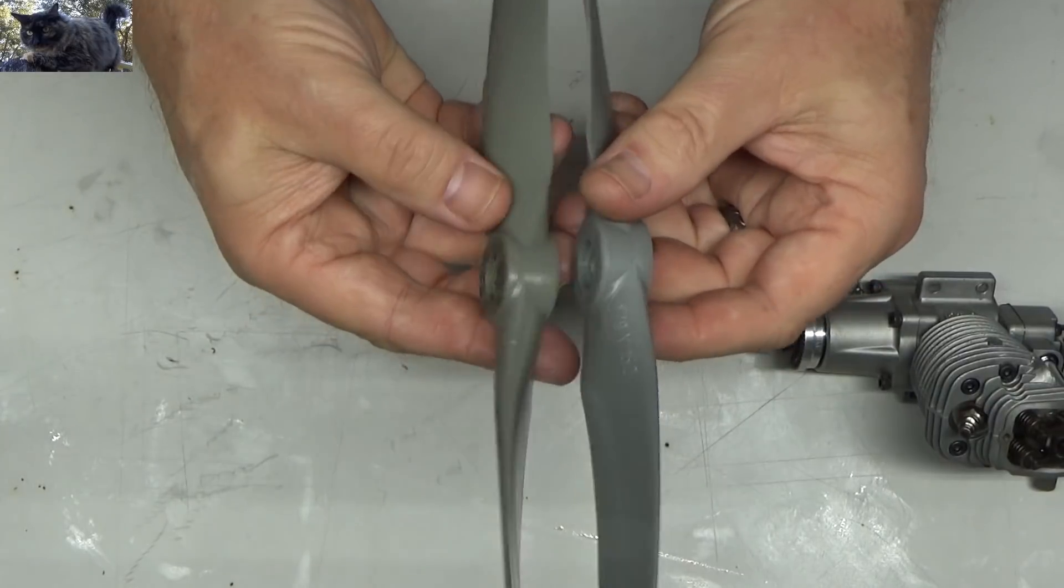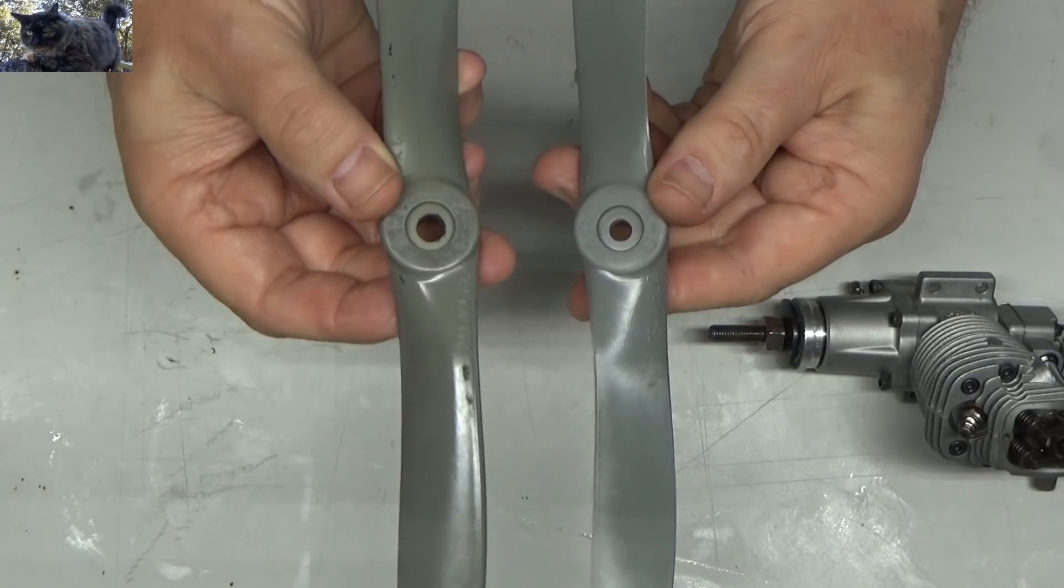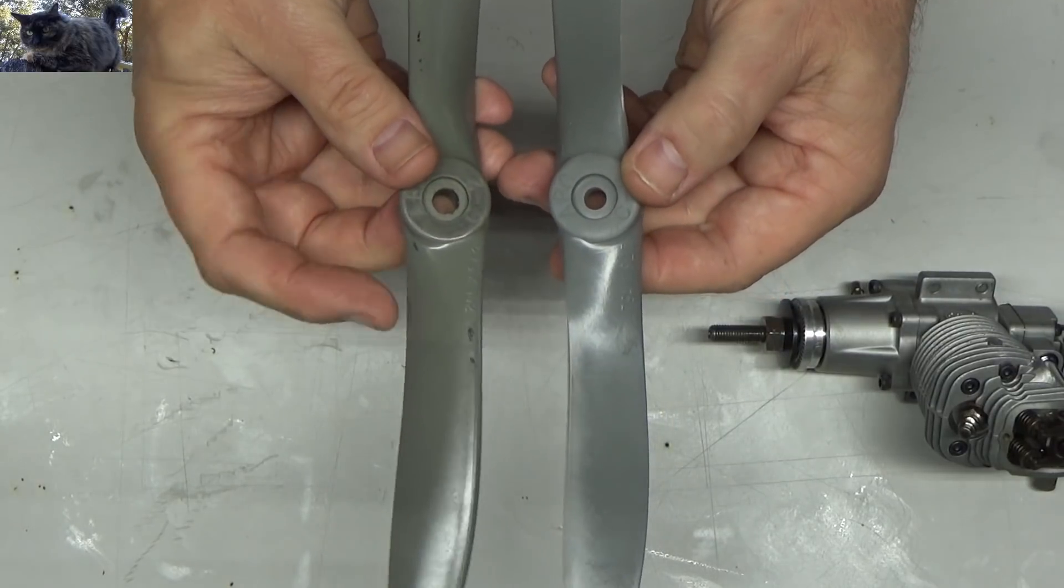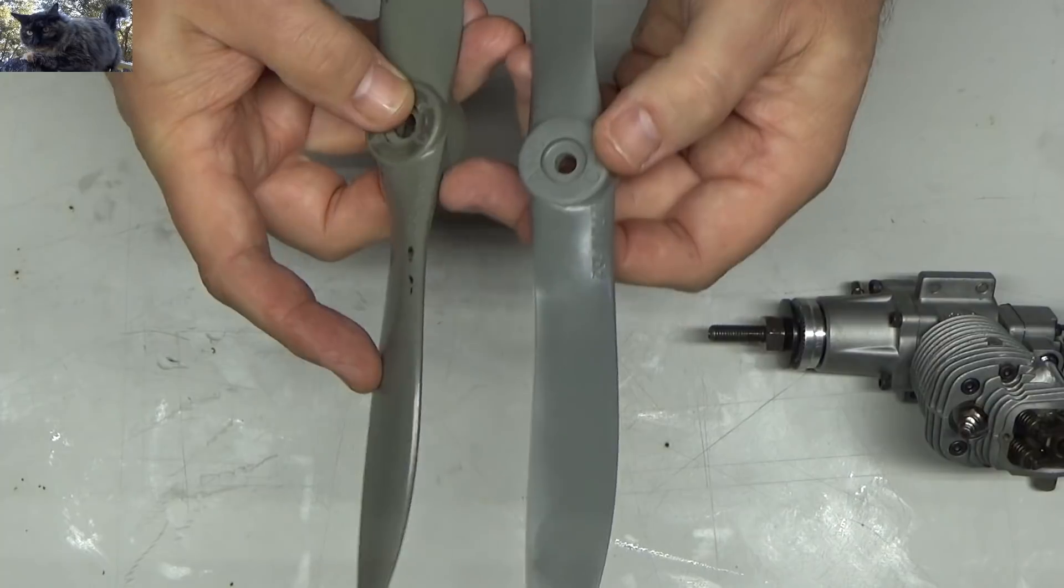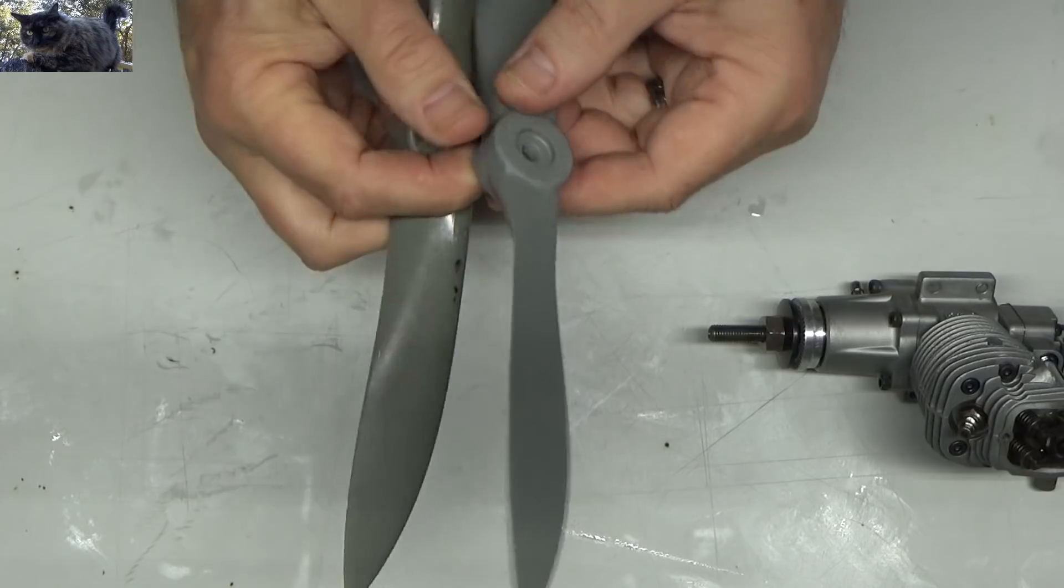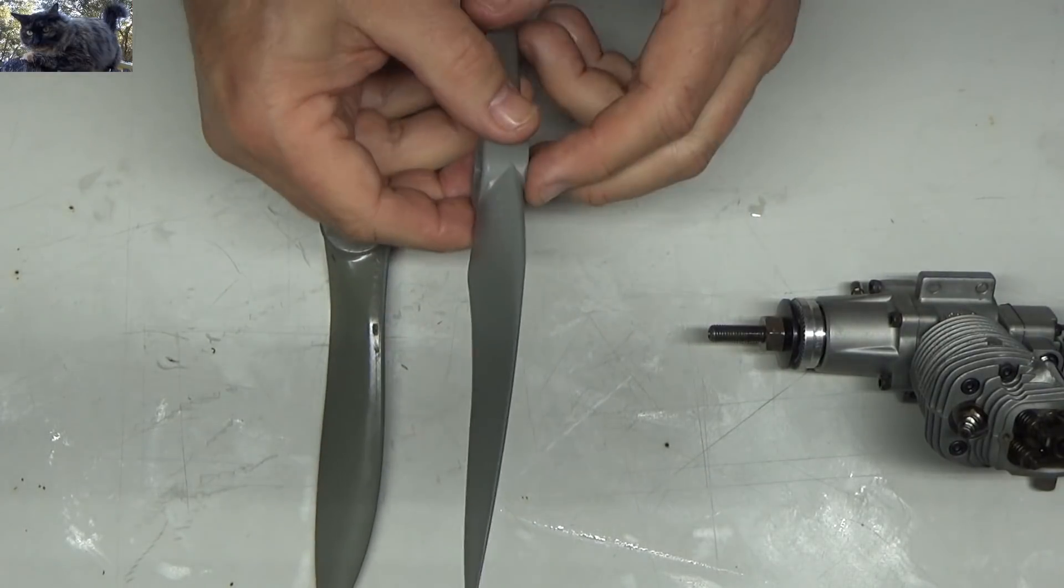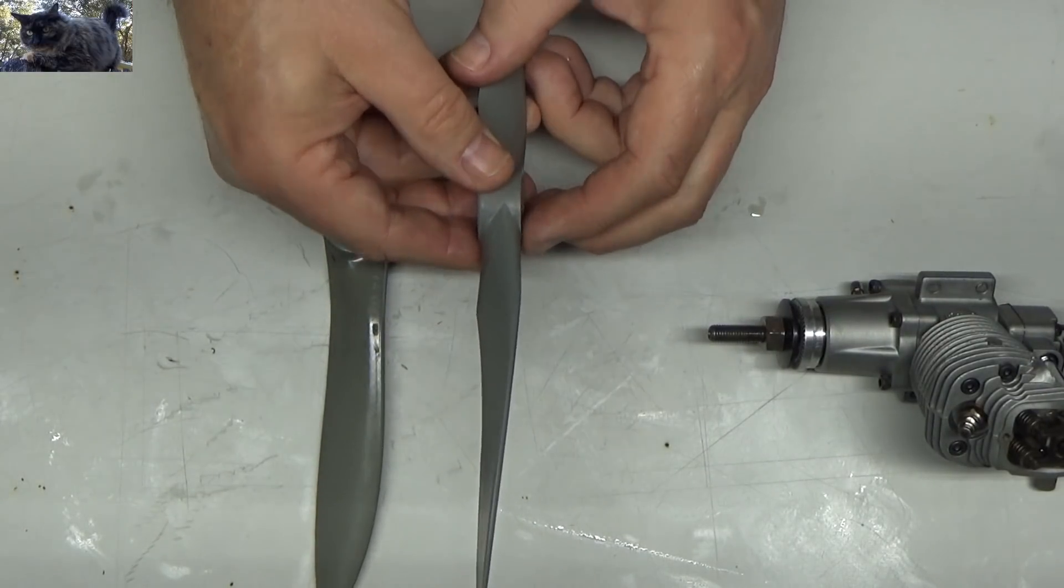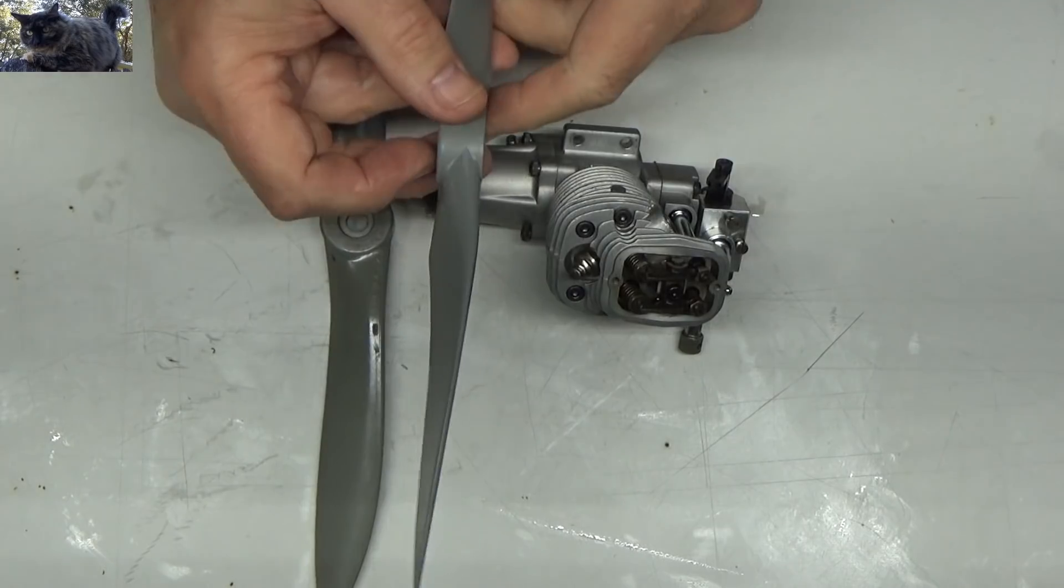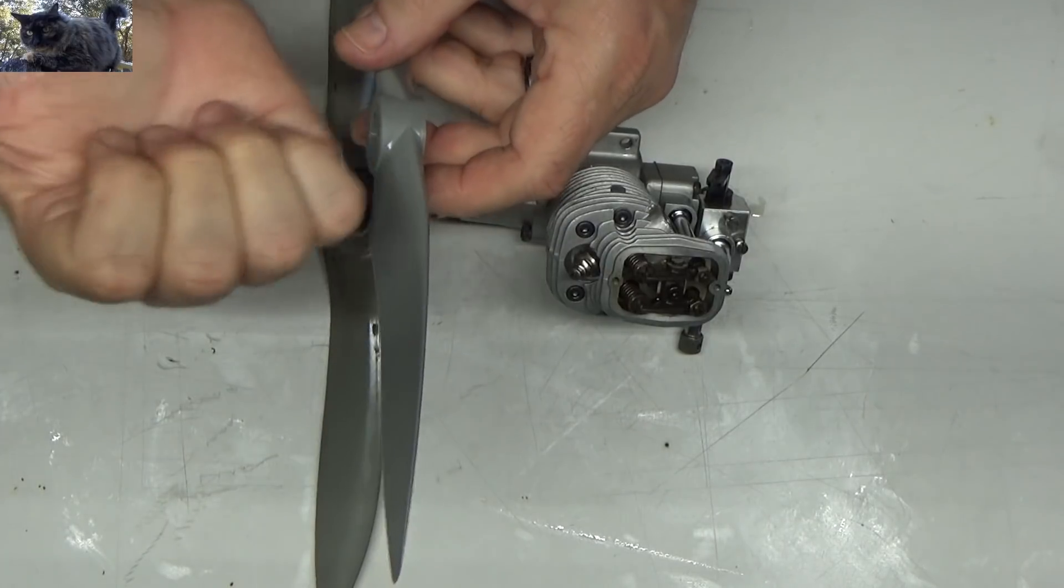Now what I've got here is two 11.6 props. I think the last time I ran this engine I ran 12.6 on it, but when I was looking for pusher props, the only one I could find in an APC was an 11.6, and I figured that was close enough for this experiment. So if you look here, this is the front of both of these props. This is the tractor prop. This is the pusher prop. Now if you look, the leading edge of this prop is on the top, whereas the leading edge of this one is kind of on the bottom. So the blade twist is different on these.